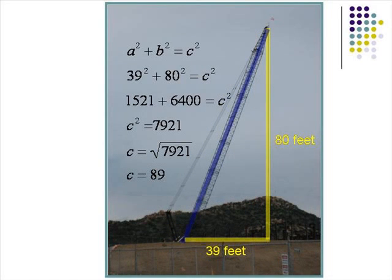Here are the steps to solve this problem. We know that A squared plus B squared equals C squared for a right triangle. A will equal 39 and B will equal 80 feet. So 39 squared plus 80 squared will equal our hypotenuse squared. When we solve for 39 squared, we get 1521, and 80 squared is 6400. Therefore, C squared equals 7921. When we take the square root of both sides, we get C equaling the square root of 7921, or 89 feet.